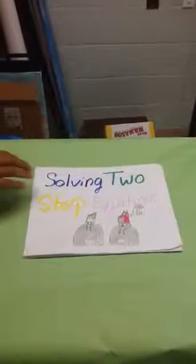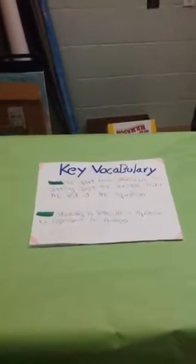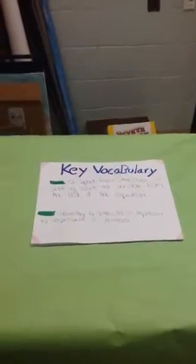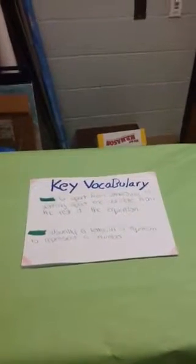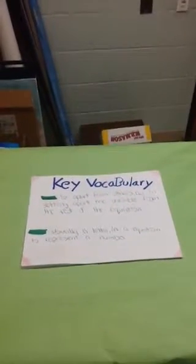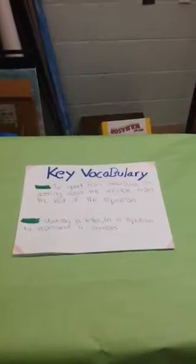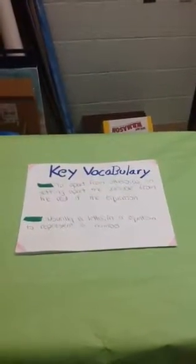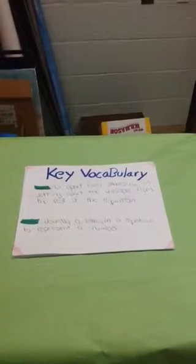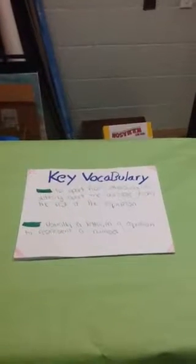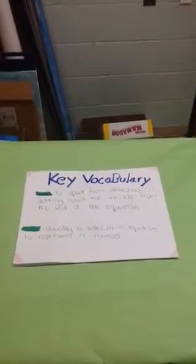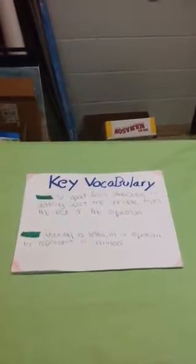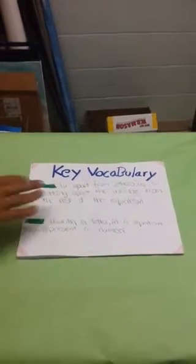Solving Two-Step Equations. Key Vocabulary: Isolate — to set apart from others, as in setting apart the variable from the rest of the equation. Variable — usually a letter used in an equation to represent a number.